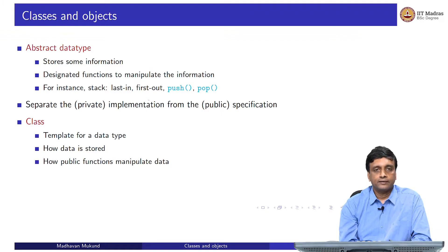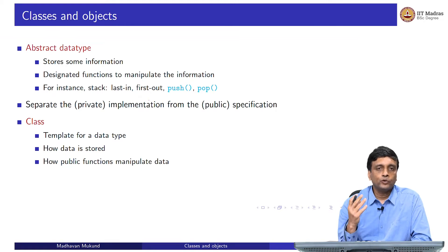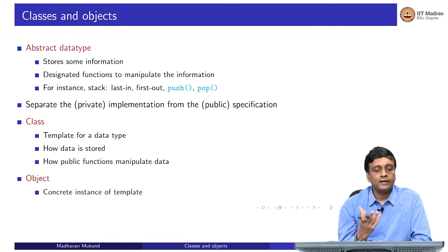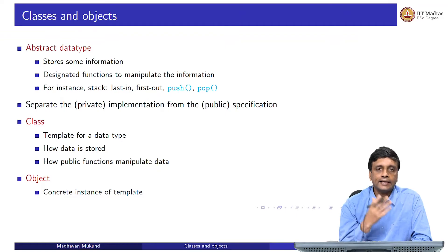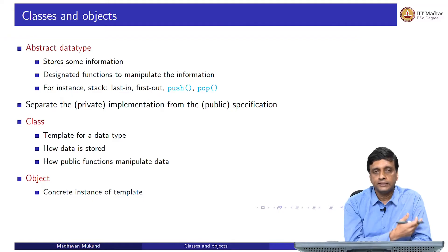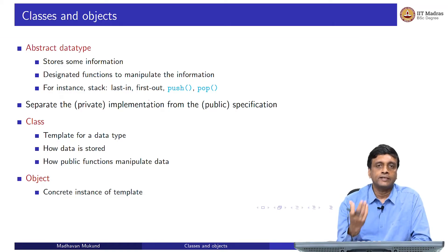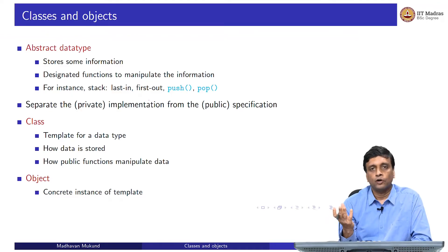One way of implementing abstract data types is to use the idea of a class. A class is a template — an abstract description of this abstract data type in terms of how the data is stored and how the functions manipulate the stored data. You can make as many copies of this template as you want, and these are called objects. I can describe what a stack should look like and then create multiple stacks, just like I can use multiple lists or dictionaries. A class is like a user-defined data type.